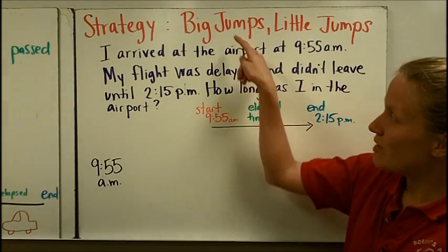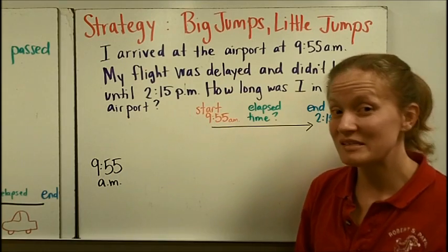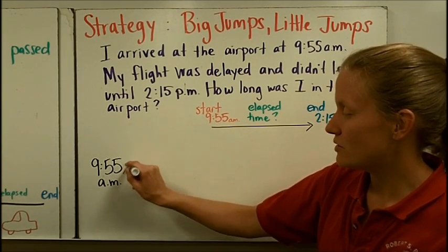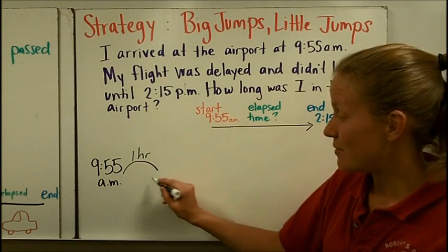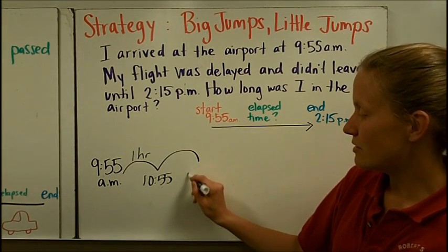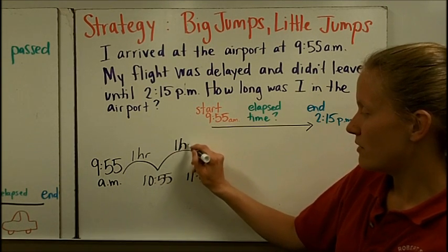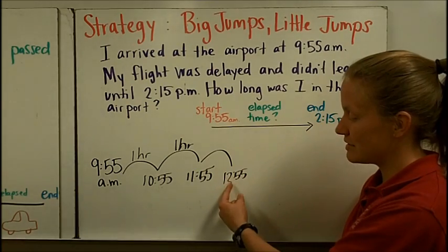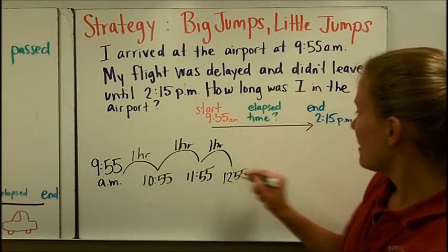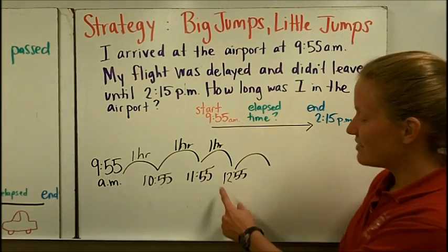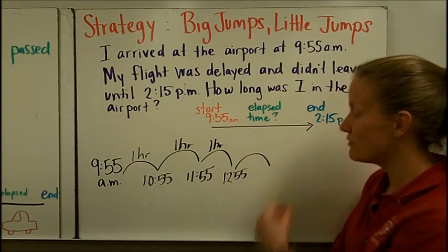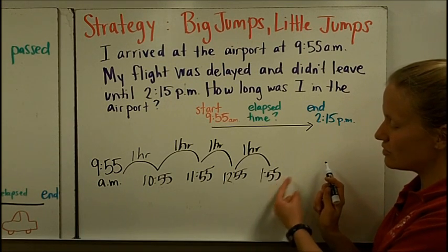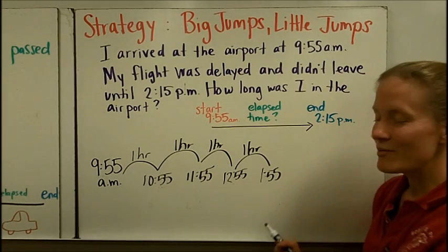I would recommend making big jumps first when finding elapsed time. The easiest amount to work with is an hour. So I'm going to jump forward like on a number line. One hour from 9:55 a.m. is 10:55 a.m. Another hour to 11:55 a.m. Another hour to 12:55 — and now we've passed noon, so this is 12:55 p.m. Then jumping another hour, it turns over to 1:55 p.m. — that's four hours. If I jumped another hour it would be 2:55 p.m., which is too far.